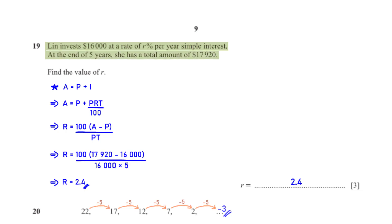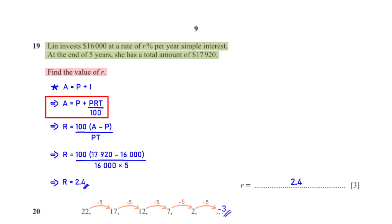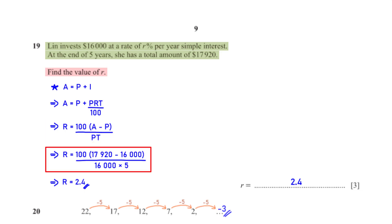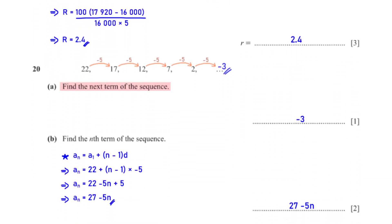Lin invests $16,000 at a rate of r% per year simple interest. At the end of 5 years she has a total of $17,920. For simple interest, the total amount equals the principal plus PRT/100. The principal P is 16,000, the total amount A is 17,920, and the time T is 5 years. When we make r the subject and calculate, we get r = 2.4.